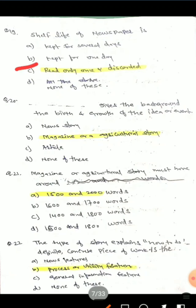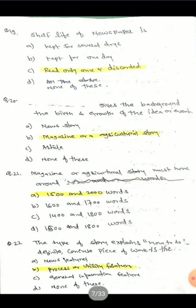Question 20: What gives the background, birth, and growth of an idea or event? Options are: news story, magazine or agriculture story, article, none of these. The correct answer is magazine or agriculture story.